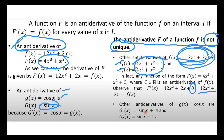Other antiderivatives of cos x could be sin x + π or sin x − 1. So it is not limited to one or two antiderivatives, since we can add any constant and it will have no effect on our derivatives. If capital F is an antiderivative of small f on interval I, then every antiderivative of f on I is given by F(x) + C, where C is an arbitrary constant.